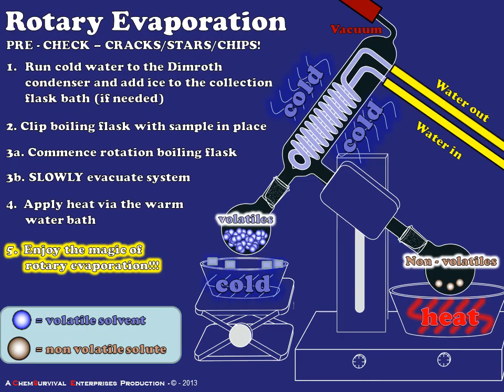I can simply reverse the process of starting the rotary evaporation as a means of shutting it down. Once the vacuum is quenched, I can remove my flask and begin working with my non-volatile material. This is how rotary evaporation works — good luck with it in the lab, and we'll see you next time we talk about a cool lab technique.